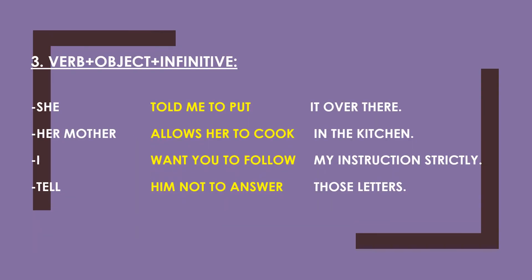Now the verb plus object plus infinitive 2. We must insert an object before the infinitive 2. For example: She told me to put it over there — we insert the object 'me' between the verb 'told' and infinitive 2. Her mother allows her to cook in the kitchen. I want you to follow my instructions strictly. The object — me, her, and you — is inserted before the infinitive 2.